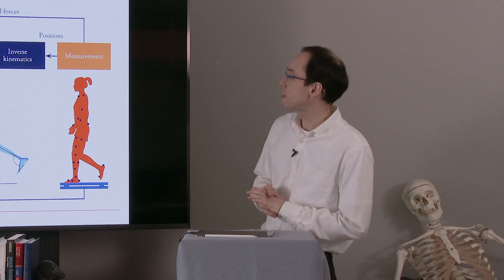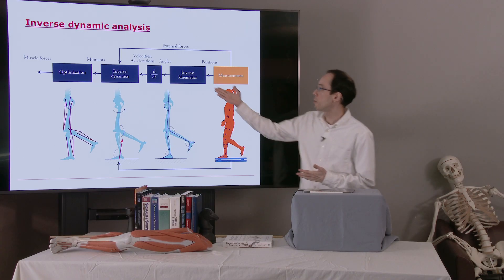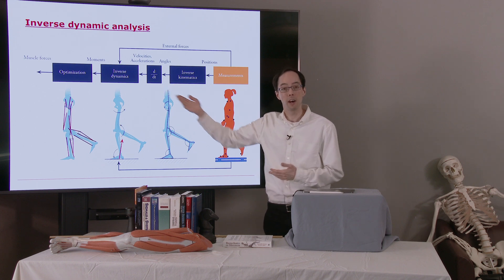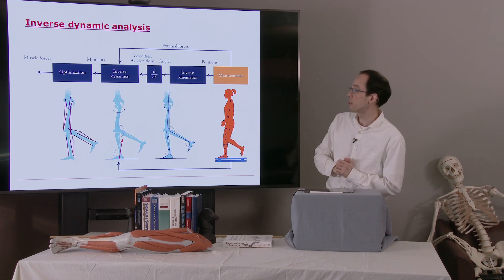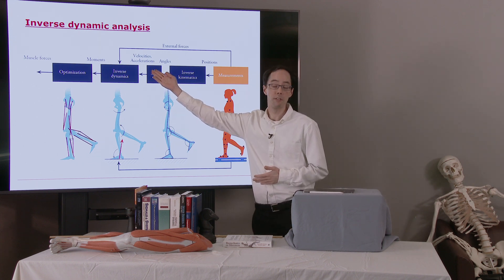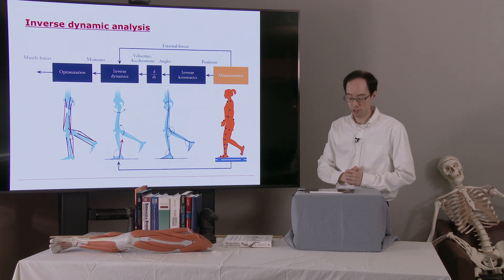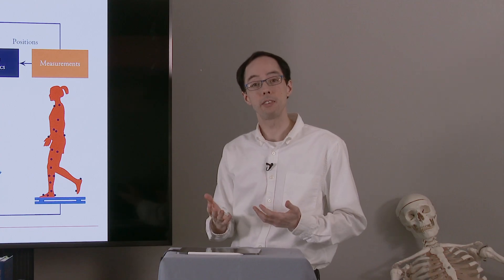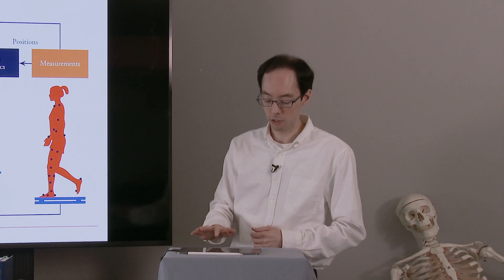Recall our inverse dynamic analysis. We have our measurements here. We've talked about inverse kinematics. Now we have this d by dt block, which is differentiation, in order to get joint angular velocities and angular accelerations. There are some things we need to consider before doing this numerical differentiation.